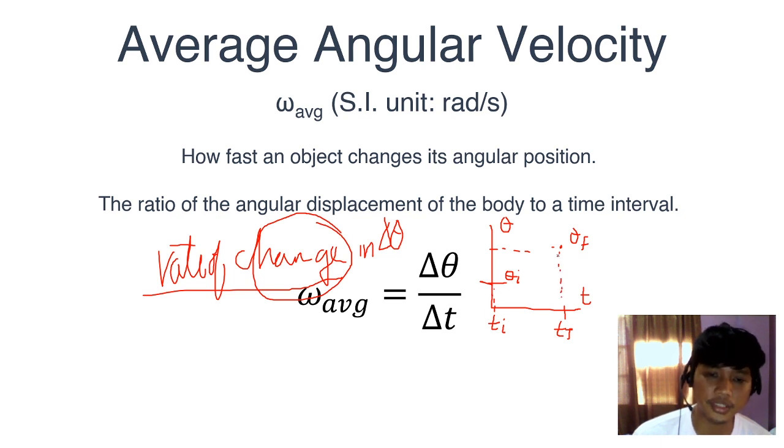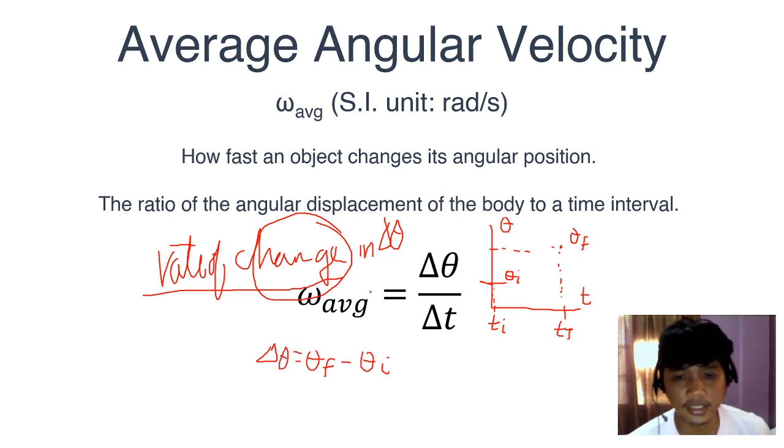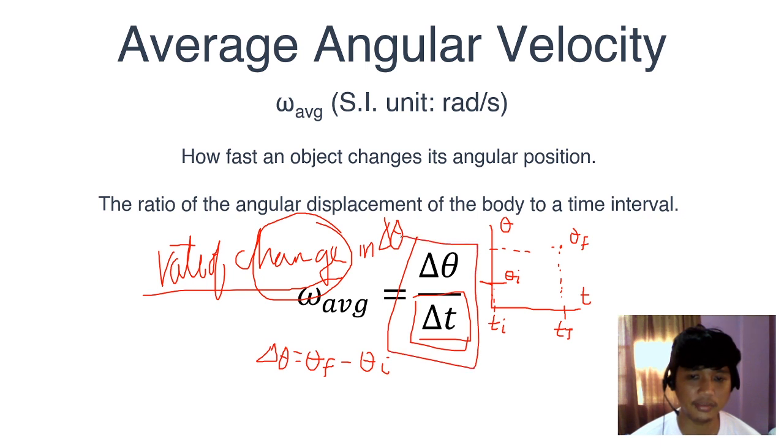Now we know it changed. It went from theta final minus theta initial - that's the change in angular position. But when we talk about average angular velocity, we're not only interested in the change in angular position, we're also interested in how fast it achieved this change in position. In a blink of an eye did it go from theta i to theta f? Or was it a gradual change? Or a very fast change?